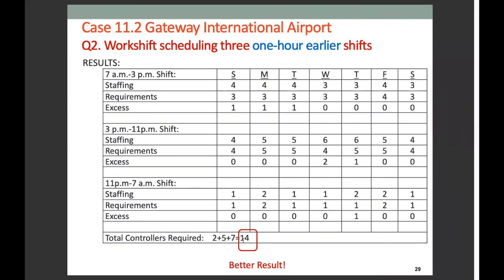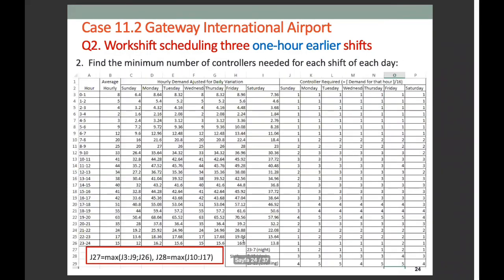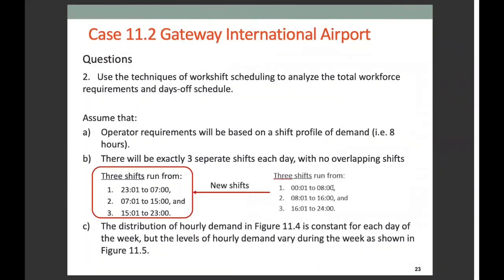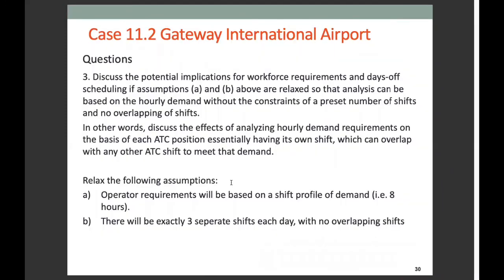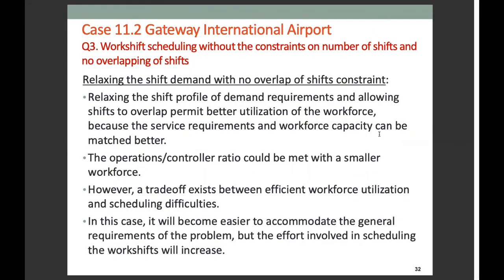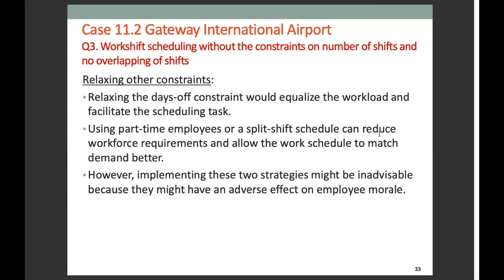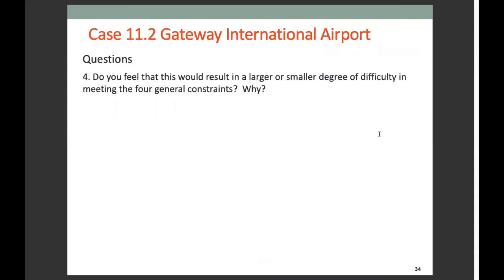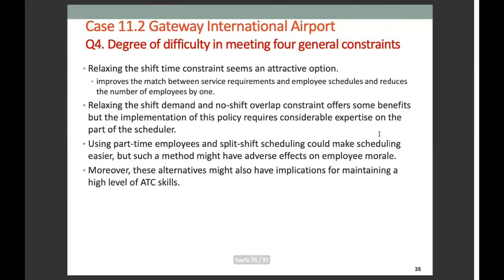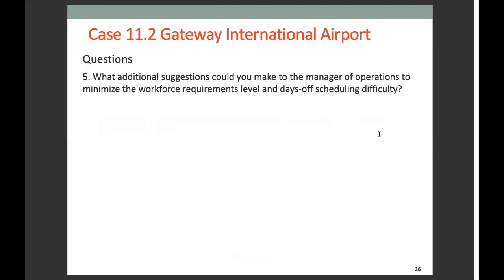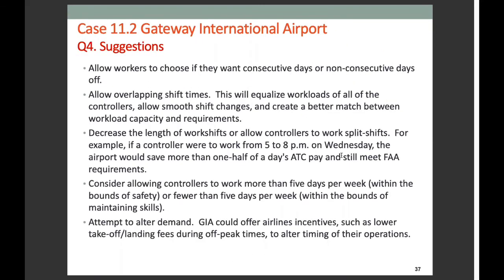As you see, we didn't change the constraints; however, we changed the composition of shifts and resulted in a better number. The lab lecture notes include discussions on potential implications of relaxing the constraints of our primary analysis, the difficulties that this may result in meeting the four general constraints, and additional suggestions that can be made to managers to minimize the workforce requirements.